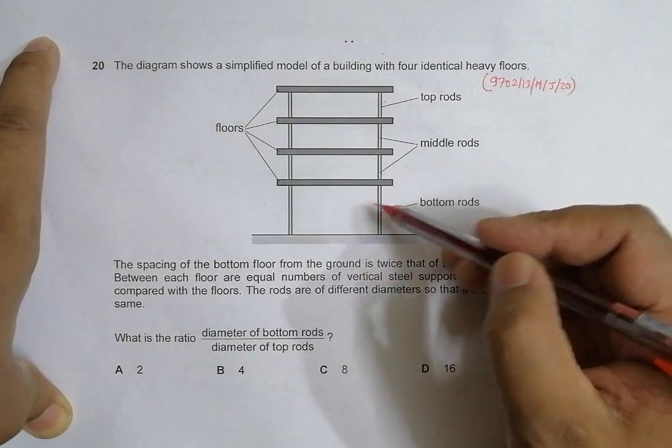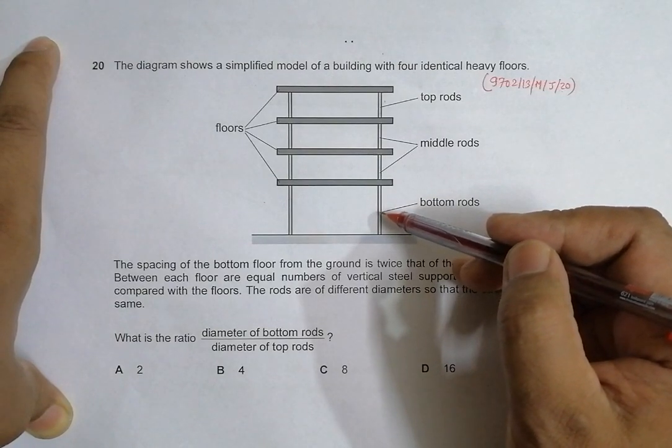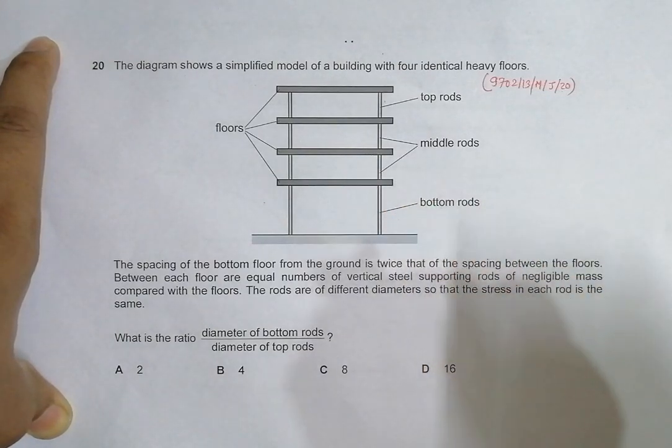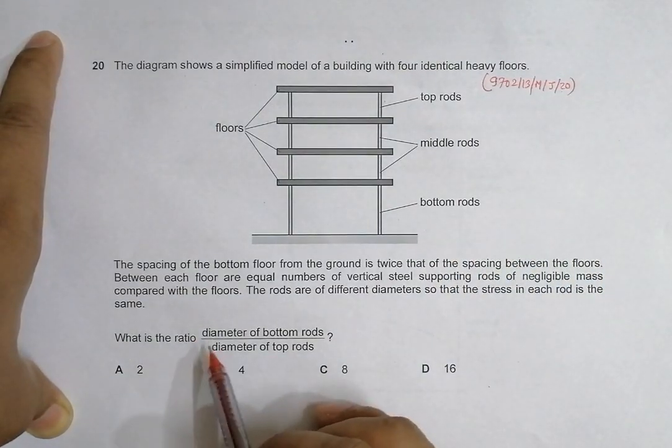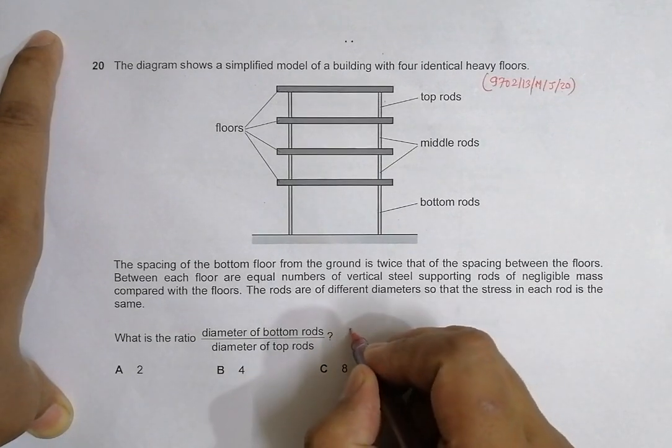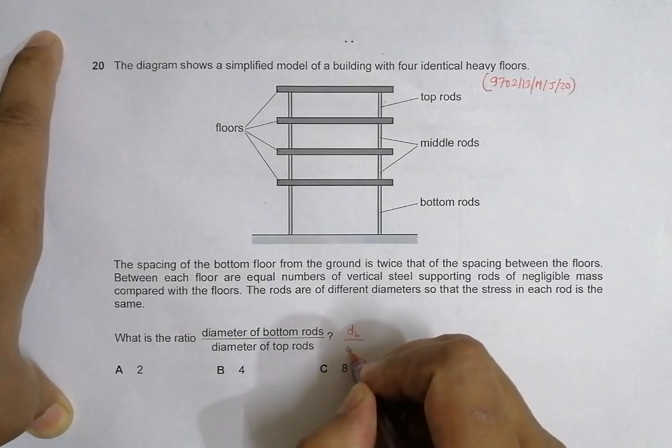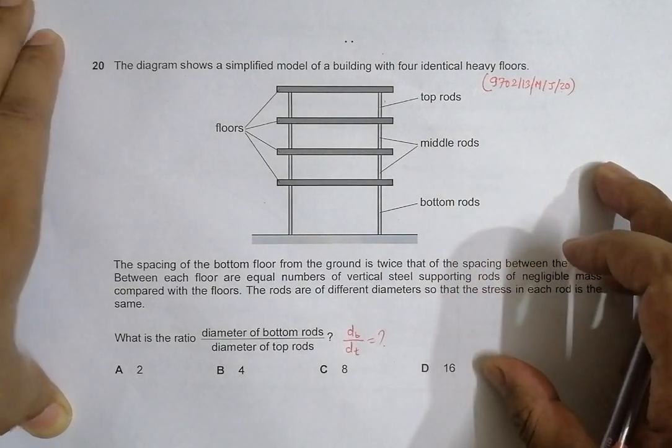These rods have to bear more load, so they might have to be thicker so that the stress is the same. The question asks: what is the ratio of diameter of bottom rods to diameter of top rods? So D bottom to D top equals what?